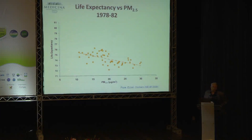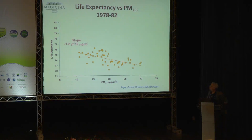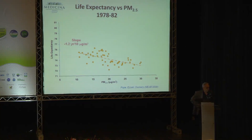A very important study published by Arden Pope, Magid Esat, and Douglas Dockery in the New England Journal of Medicine plots life expectancy against chronic ambient air pollution exposure in 55 communities in the USA in the late 1970s and early 1980s. The slope is about 1.2 years of life expectancy per 10 micrograms per cubic meter, adjusted for age, race, prevalence of diabetes, hypertension, and other chronic illnesses in each community.